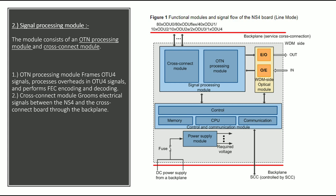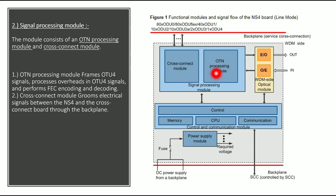Signal processing module: This module consists of the OTN processing module and the cross connect module. The OTN processing module frames OTU4 signals, processes overhead in OTU4 signals, and performs FEC encoding and decoding — this is its main function. For electrical signals going to OTN processing, it performs FEC encoding. When it receives signals from the input after optical to electrical conversion, it performs FEC decoding.